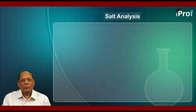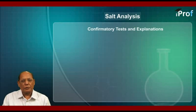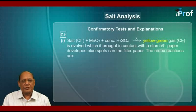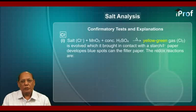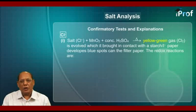Now we have confirmatory tests and explanations. First, let us discuss the chloride ion. The first confirmatory test is: take the salt containing chloride ion, plus manganese dioxide (MnO2), plus concentrated H2SO4, and heat it. A yellow-green gas, that is chlorine, is evolved.